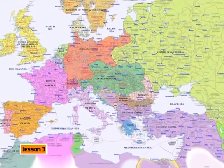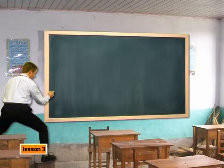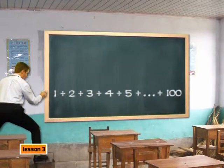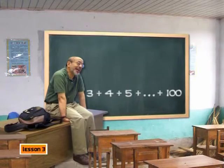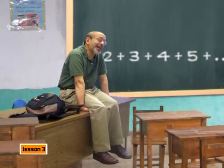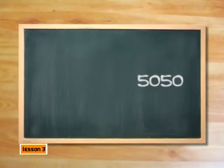Let's kick this lesson off with a short story to set the scene. Our tale is set in Germany. A schoolteacher has set his class a task. He asked his young learners to work out a sum with a very large number of terms — to add up the numbers 1, 2, 3, 4, 5, and so on, all the way to 100. The teacher thinks this will take the children a very long time, so he sits down expecting his class to be quiet. But no sooner has the teacher sat down than one of the young boys comes up with an answer of 5,050.